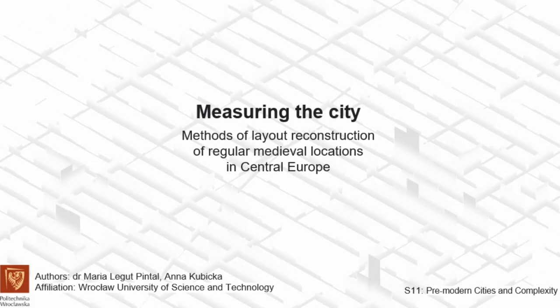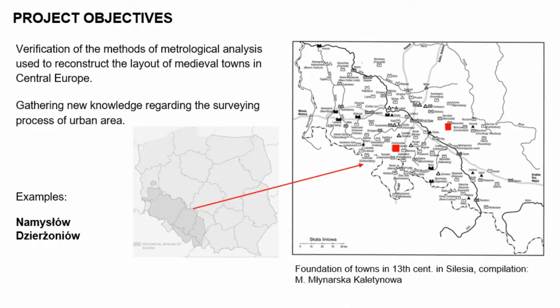I would like to present preliminary results of a potential future project about the methods of layout and reconstruction of regular medieval locations in Central Europe. The aim of the project is to verify the methods which were already used in this kind of analysis, but with additional data which has emerged over time, since these methods started to be used in the 1960s, and to apply another method which has never been used before at urban scale — usually only at very small scale, like architectural details or small objects.